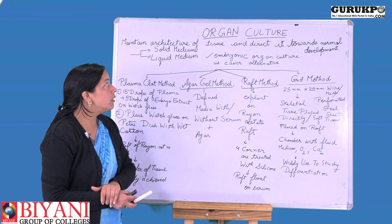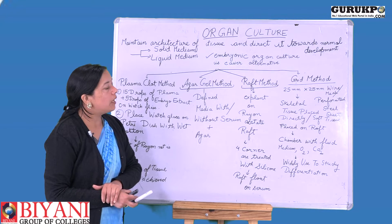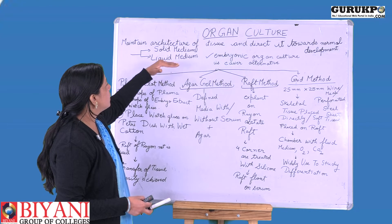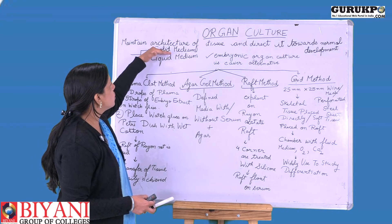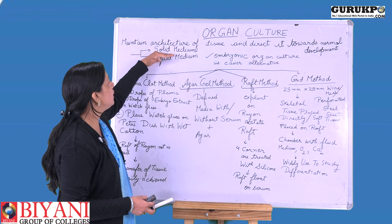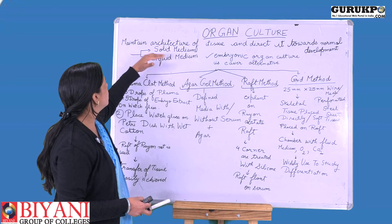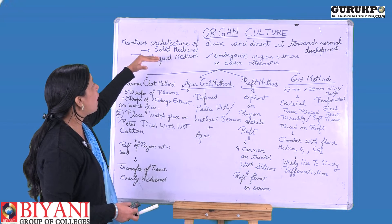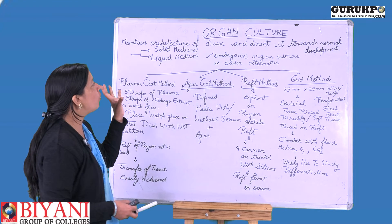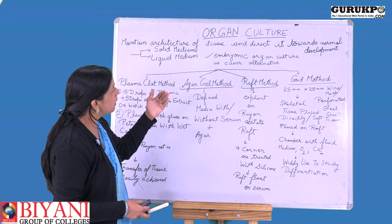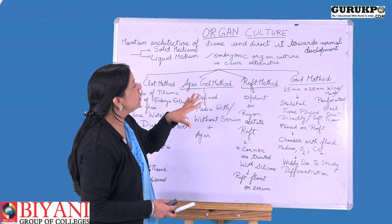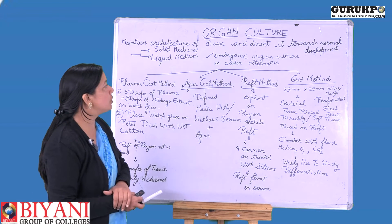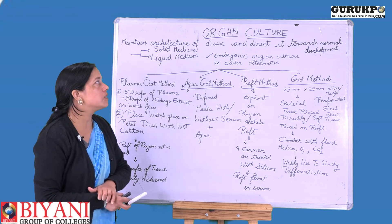Organ culture is to culture an organ in in vitro conditions. We can culture it in both solid medium as well as liquid medium. The basic objective of organ culture is to maintain the architecture and whole structure of the tissue, and to direct it towards normal development so that it may form an organ which may be beneficial for us.